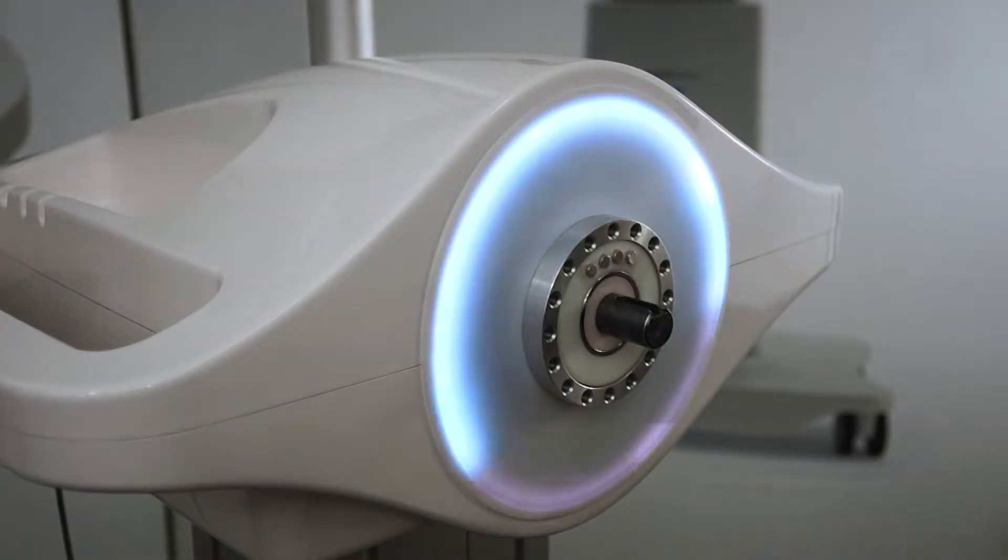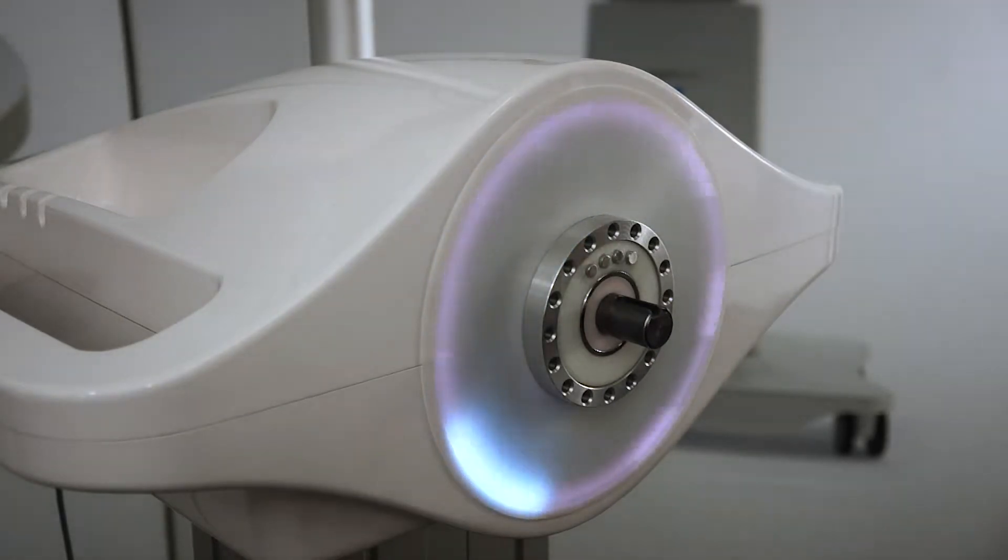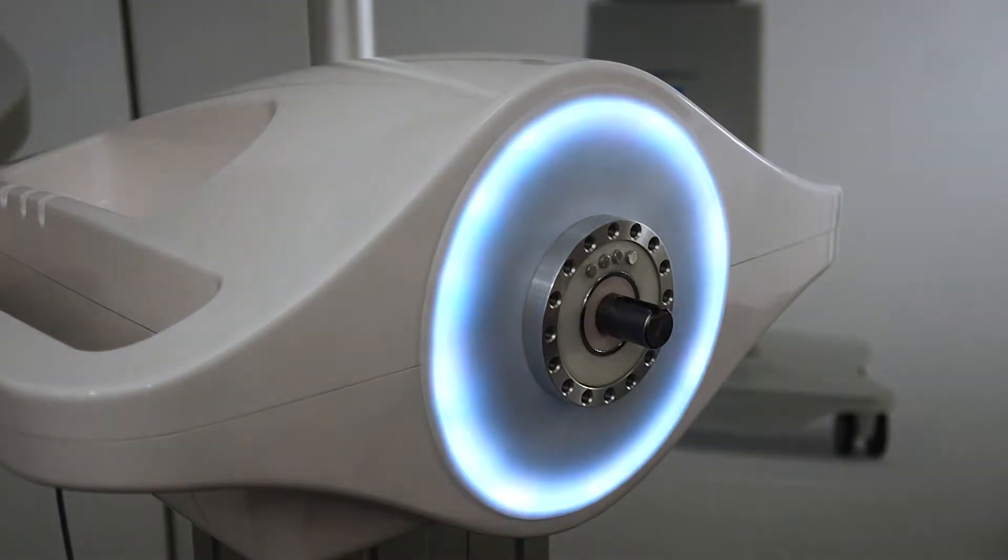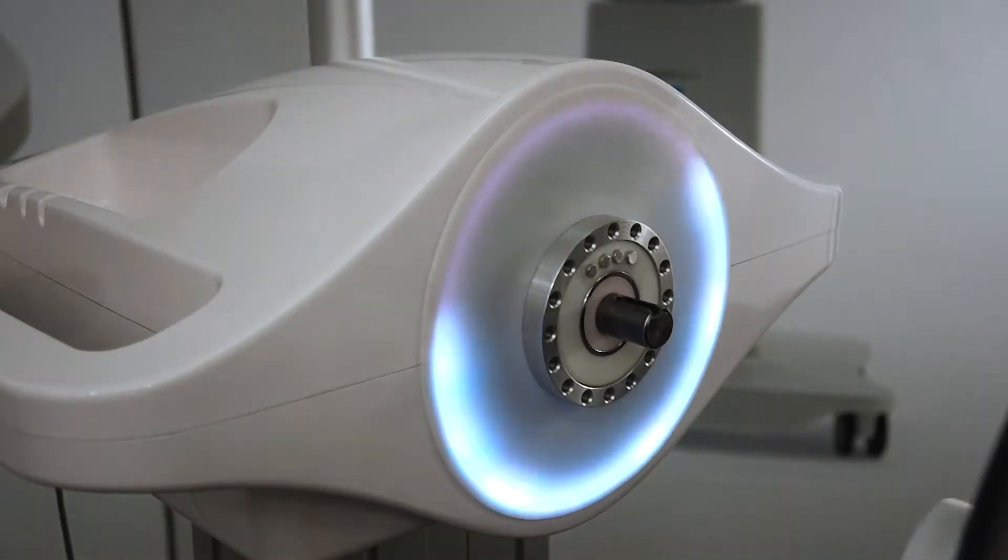While connecting the extensions, make sure that Luna's shaft with the key is in the upright position. That means it's fully calibrated and ready to get the extension connected. Each extension has three steps of putting it in and connecting it to Luna.